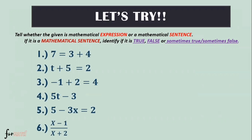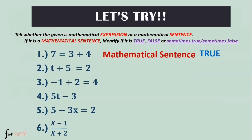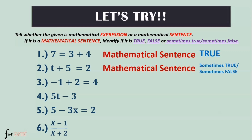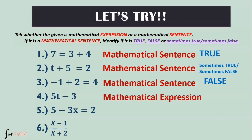Number 1: 7 equals 3 plus 4. This is a mathematical sentence, and it is a true sentence because 3 plus 4 is really equal to 7. Number 2: P plus 5 equals 2. This is a mathematical sentence, and it is sometimes true, sometimes false because we don't know the value of P. Number 3: negative 1 plus 2 equals 4. This is a mathematical sentence, and it is a false sentence because negative 1 plus 2 is not equal to 4. Number 4: P minus 3. This is a mathematical expression — since it is an expression, we don't need to identify if it's true, false, or sometimes true, sometimes false.